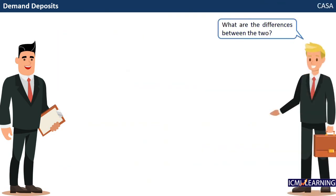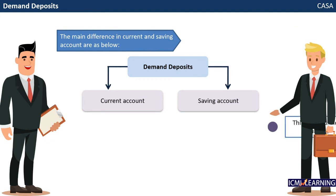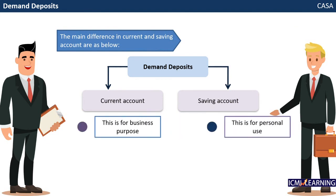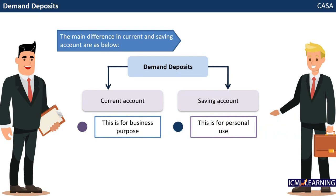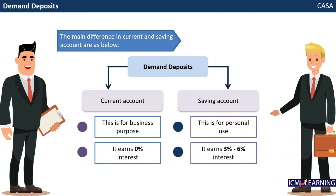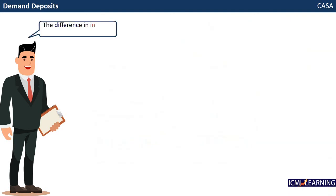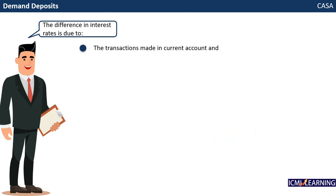What are the differences between the two? The main differences between current and savings accounts are as below. Current account is for business purposes, whereas savings account is for personal use. In current account, it earns 0% interest. In savings account, it can earn from 3% to 6% interest. The difference in interest rates is due to the high number of transactions in a current account and the operating cost to maintain such an account.